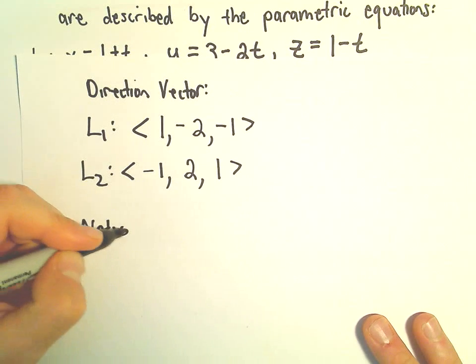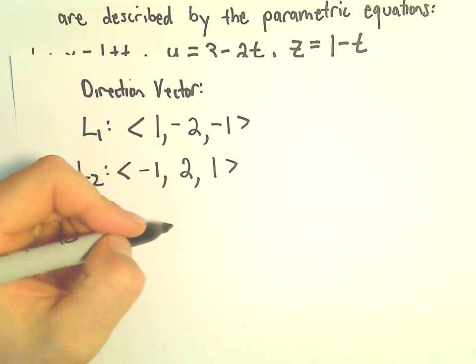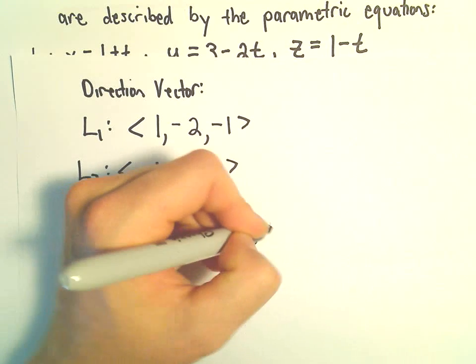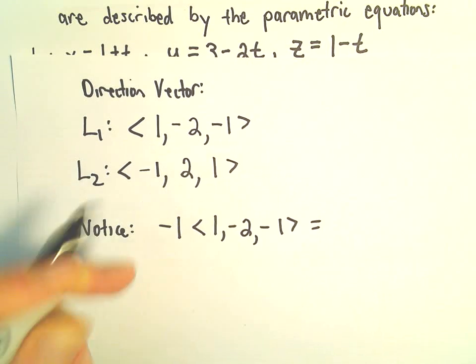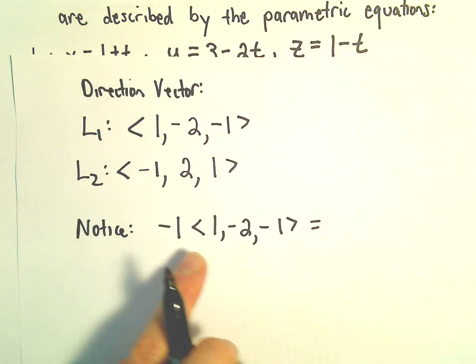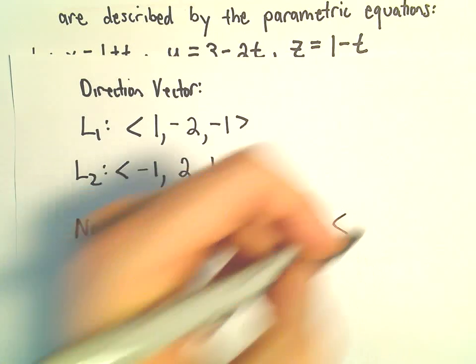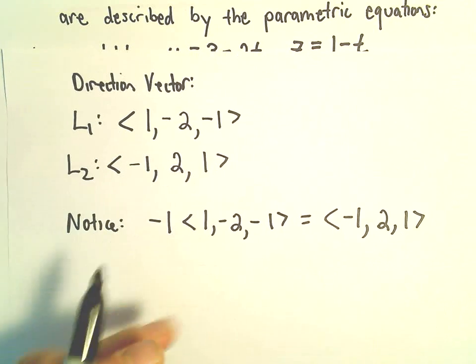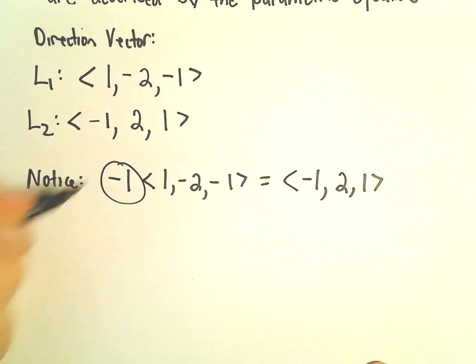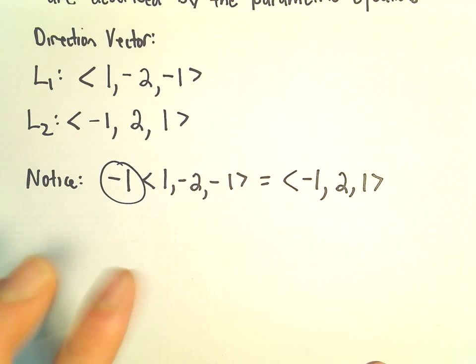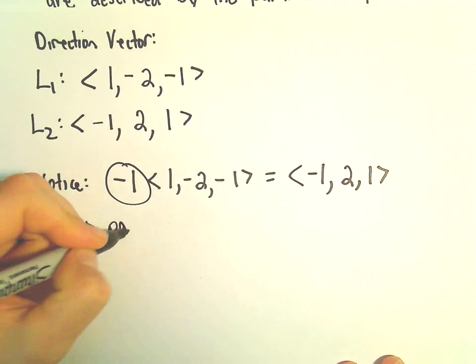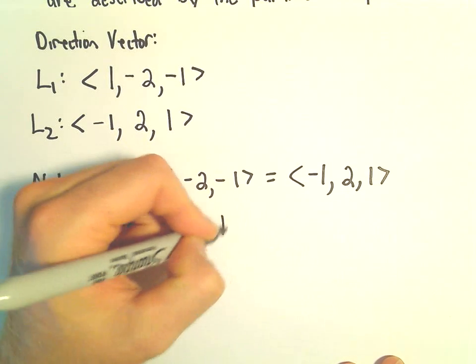So notice, these are actually multiples of each other. If we take line 1 and we multiply it by negative 1, we'll get negative 1, positive 2, and positive 1. But that's the direction vector of the second line. So since one is a multiple of the other, we can just multiply by some number to get the other one. That tells us that the lines are either parallel or they coincide.